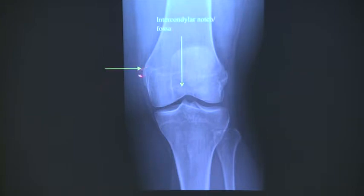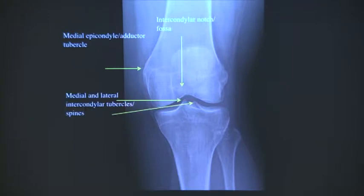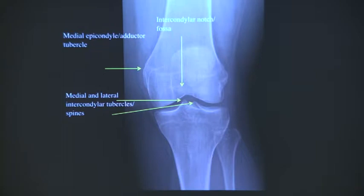This is the medial epicondyle - or adductor tubercle, because it's the attachment site of the adductor magnus. How do you call this structure here? That's the intercondylar eminence - lateral intercondylar tubercle or spine. These are the medial and lateral intercondylar spines. Be careful because this is not the attachment of the ACL and PCL. They are usually avulsed when there is an avulsion of the ACL.